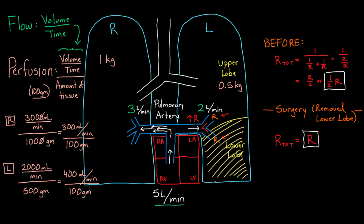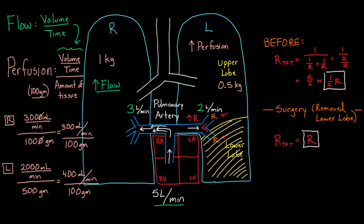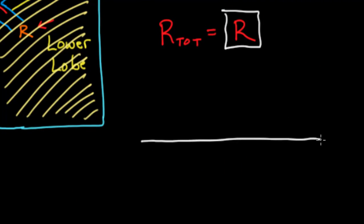This reveals something interesting: the right lung has more blood flow, but the left upper lobe has more perfusion — 400 vs. 300 mL/min per 100 grams. So just because one side has more flow doesn't necessarily mean it has more perfusion. It depends on the weight of the tissue. Flow and perfusion are closely related, but they're not the same thing.